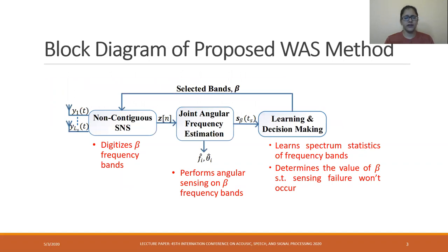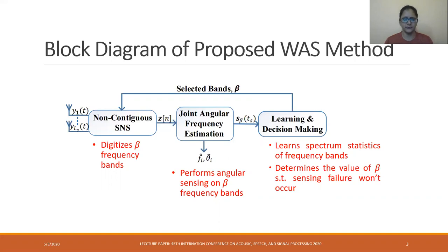We have proposed an intelligent wideband angular spectrum sensing method where the output of the antenna is passed to the non-contiguous sub-Nyquist sampling block, which digitizes only selected frequency bands whose indexes are stored in vector beta. These digitized beta frequency bands are passed to a joint angular frequency estimation block whose task is to determine the carrier frequency and direction of arrival of busy frequency bands present in beta. The occupancy status of these beta frequency bands is then passed to the learning and decision-making block, which performs the learning of all the frequency bands, learns the spectrum statistics, and determines the optimum value of beta so that sensing failure won't happen and the throughput is maximum.